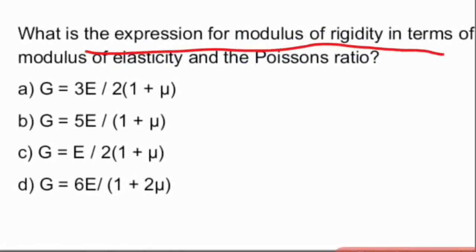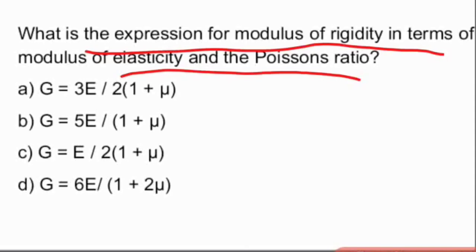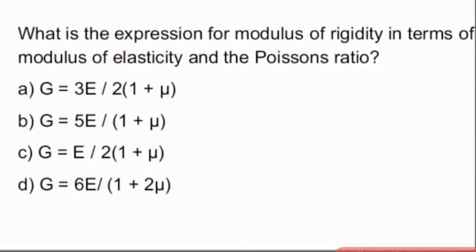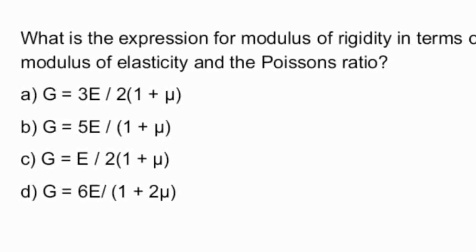Next: what is the expression for modulus of rigidity in terms of modulus of elasticity and Poisson's ratio? The answer is G = E / (2(1 + μ)). This relation between rigidity modulus and Young's modulus is very very important: G = E / (2(1 + μ)), where G is the rigidity modulus and E is Young's modulus.